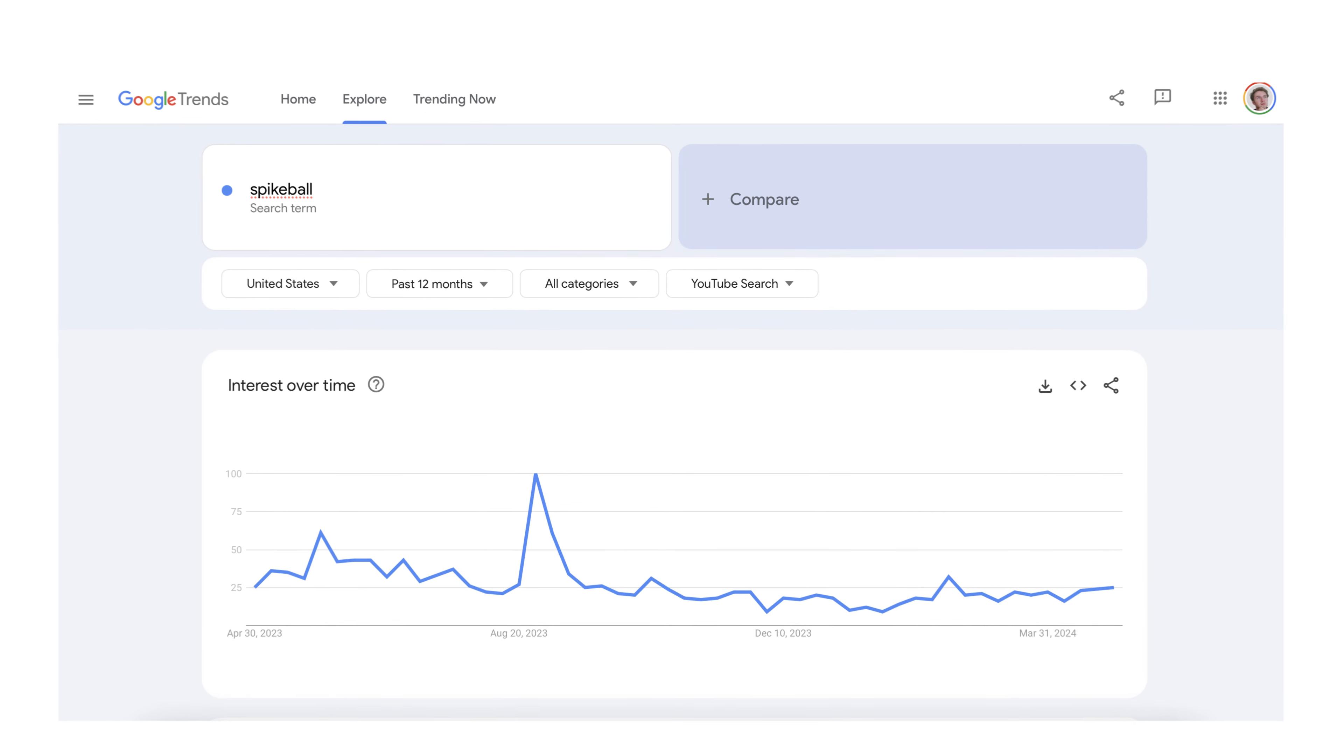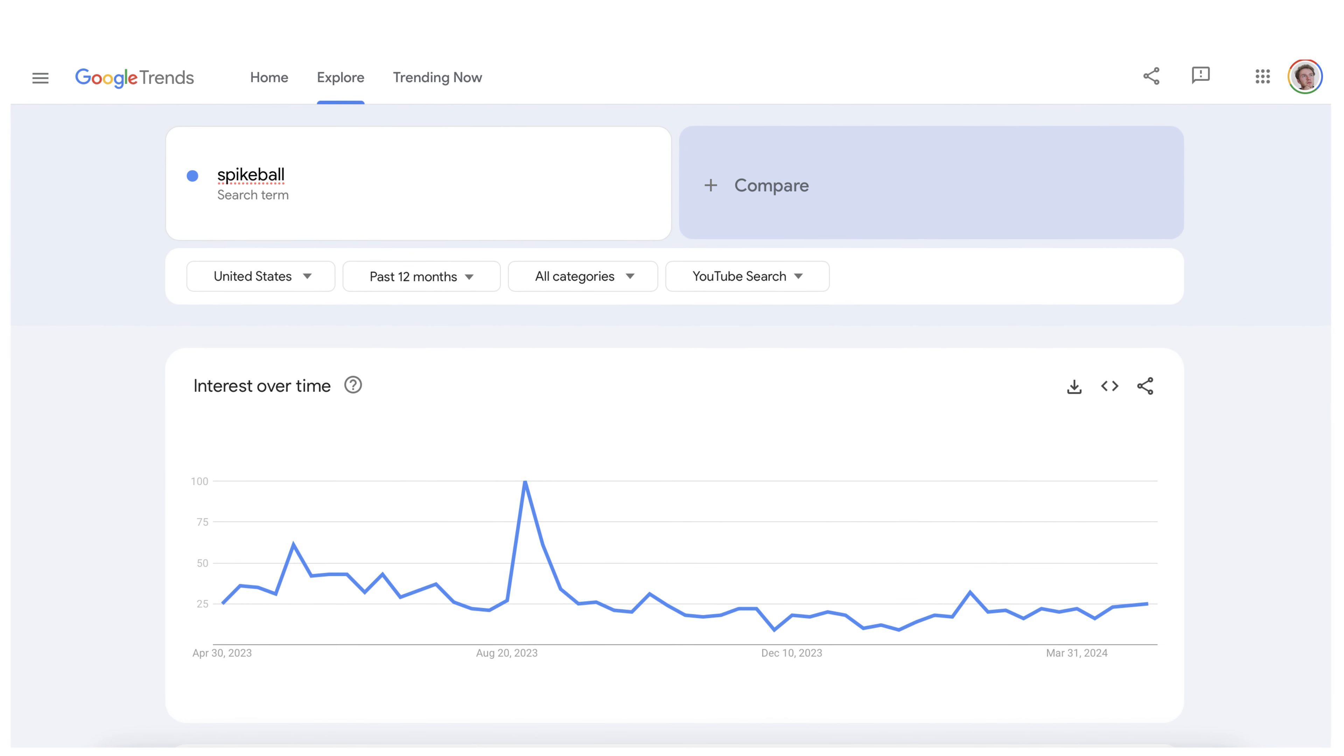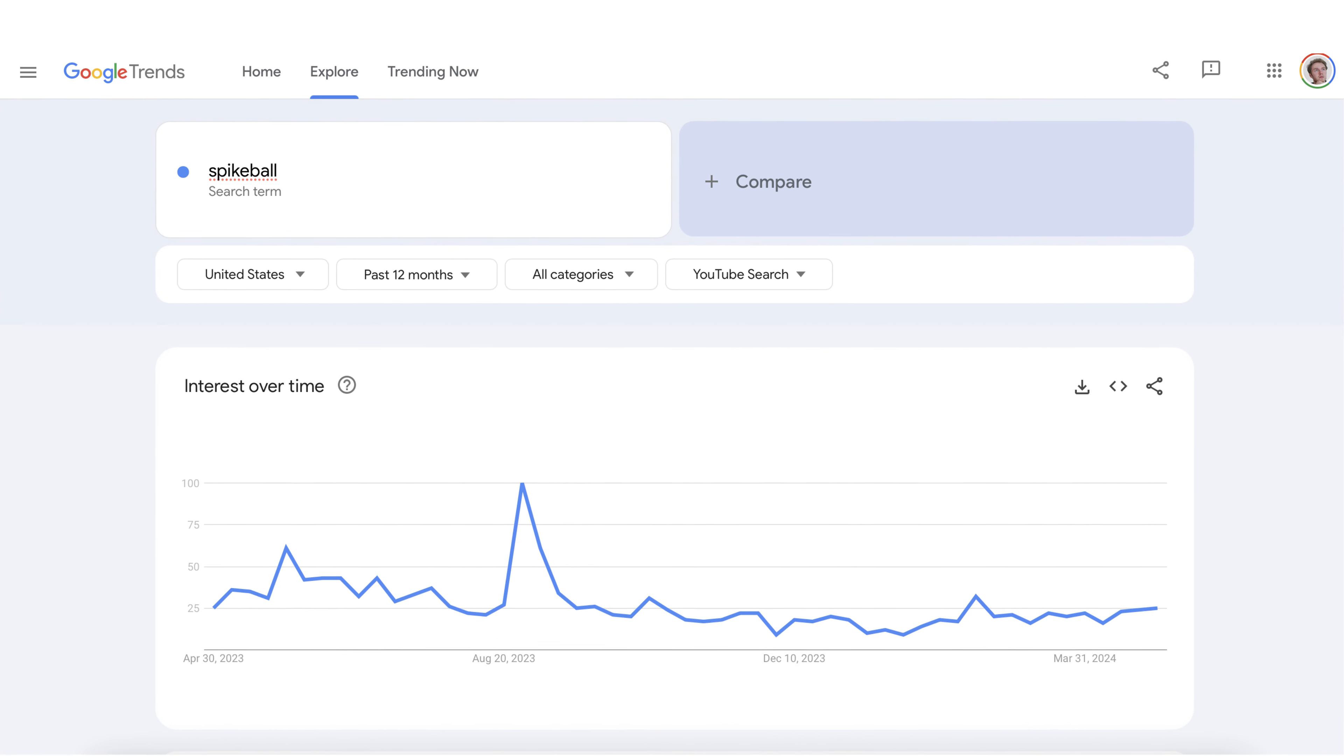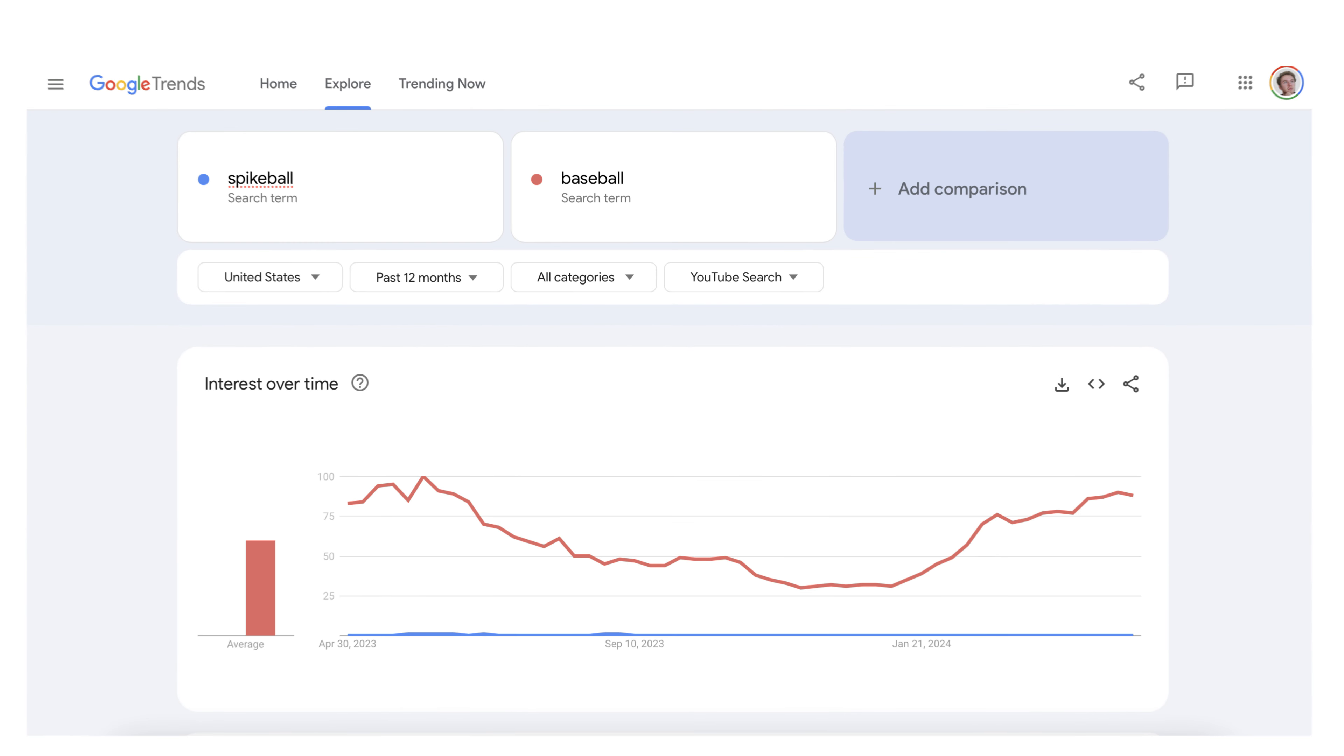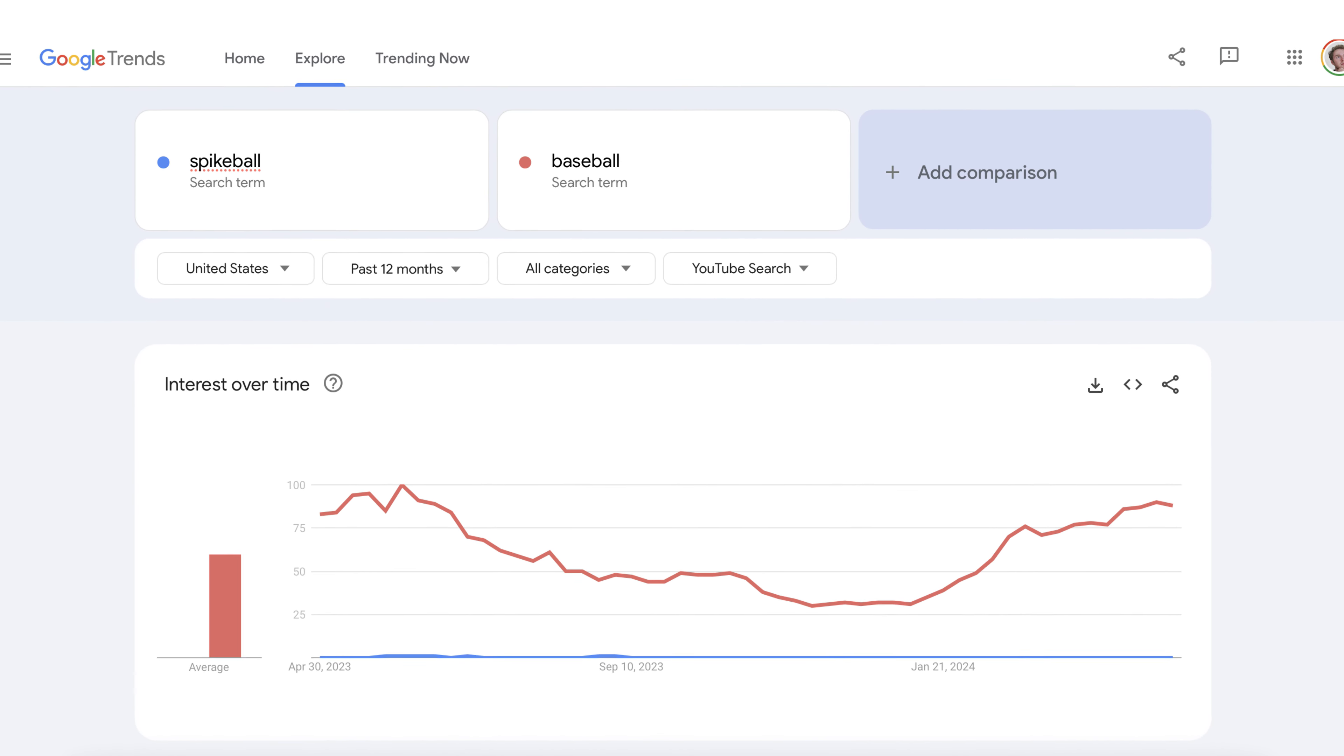But if I were to look up a niche sport like spike ball, then the interest level is only 25. And if we take it one step farther to compare spike ball to baseball, it becomes very clear that baseball has a much larger total addressable market. And that makes it the better niche.